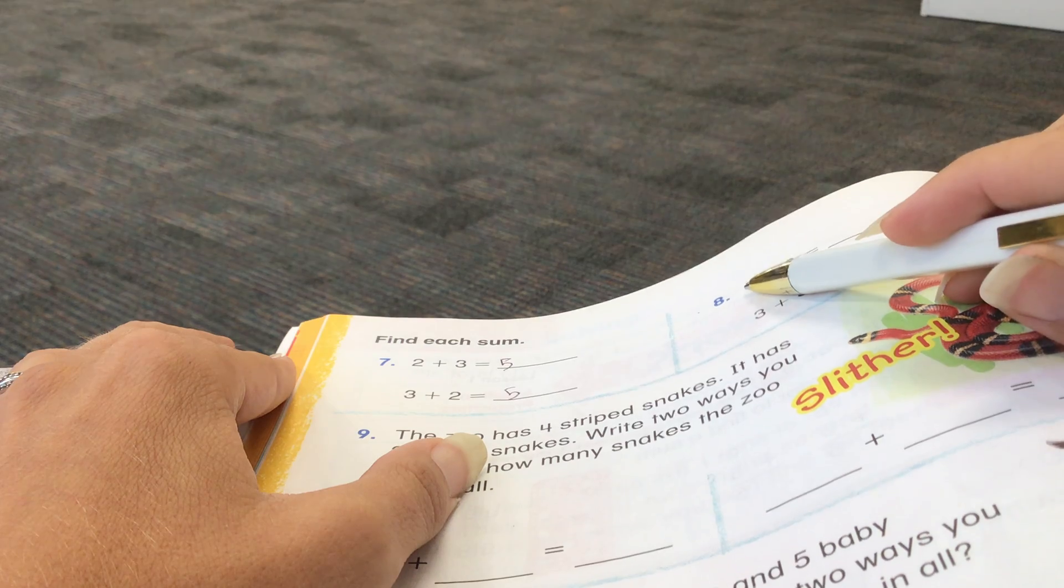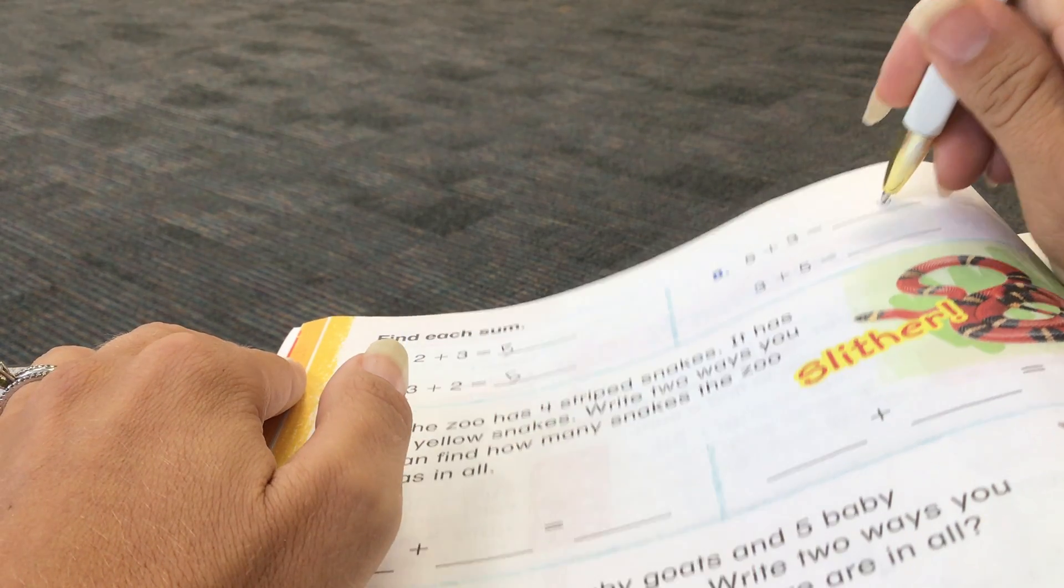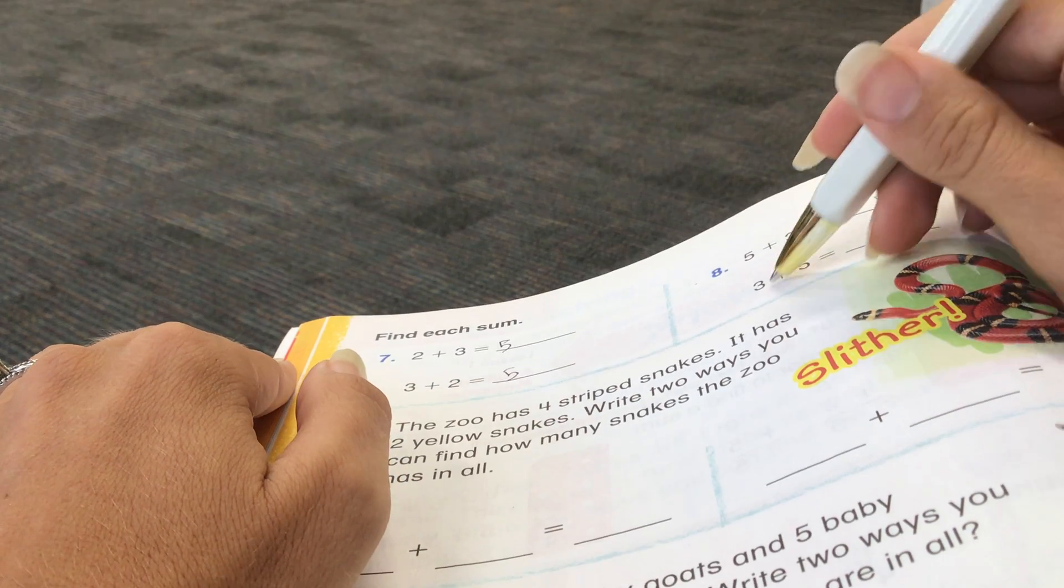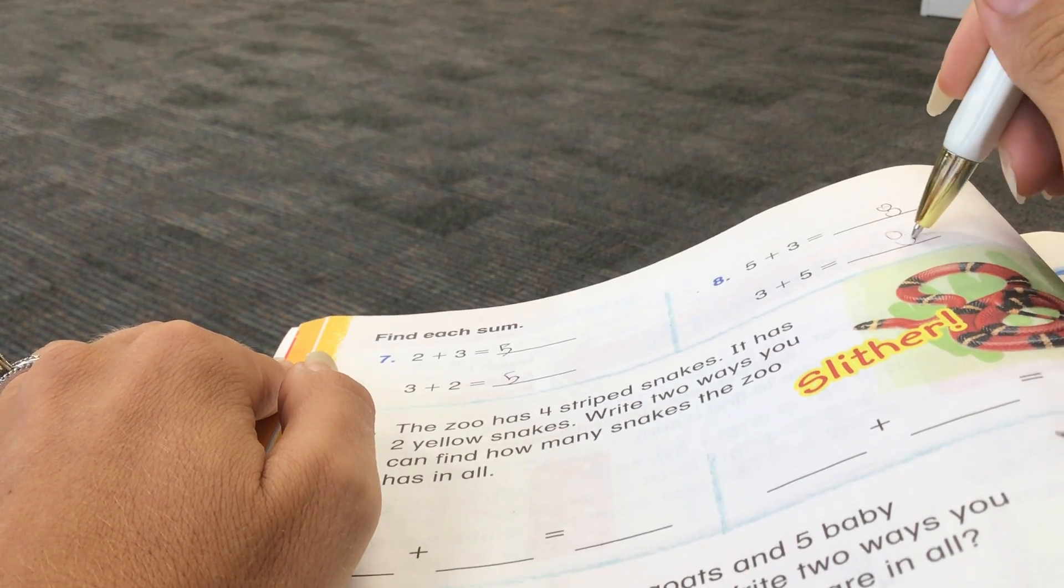5 plus 3. Start with the 5. 6, 7, 8. And same thing here. 3 plus 5. Start with the 5, 6, 7, 8. Same answer. Same numbers. We just flipped them around.